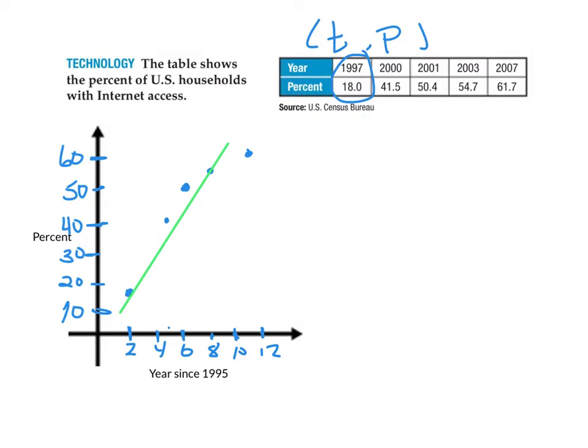Next would be to write the prediction equation, which is really just the equation of that line. This is why we wanted that line to go through two specific points so that we could have points to write an equation from. Remember this first point was year 2, and then the percentage was 18. The second to last point, that was from 2003, that would be year 8, which was at 54.7%.